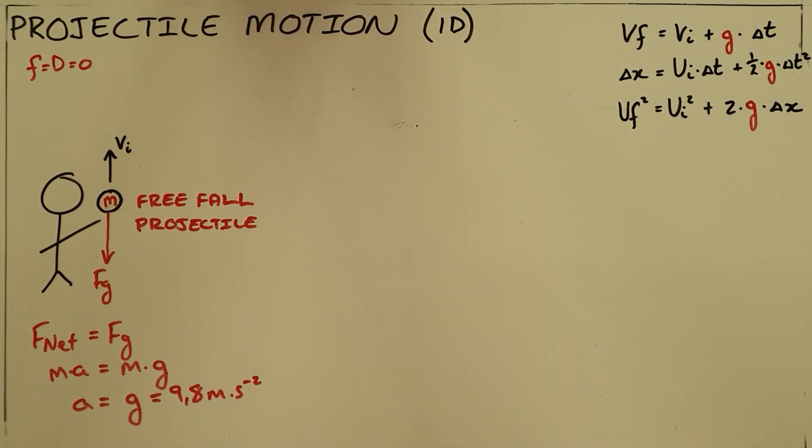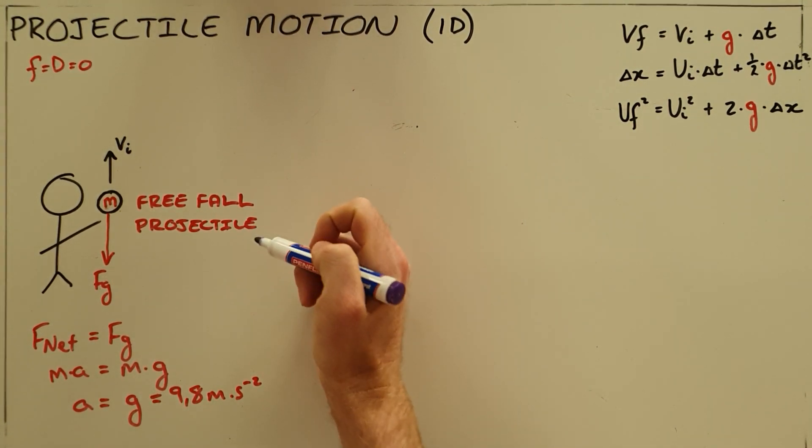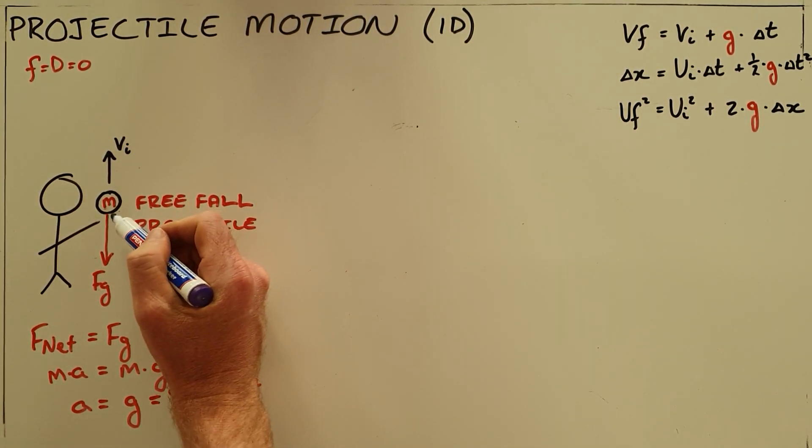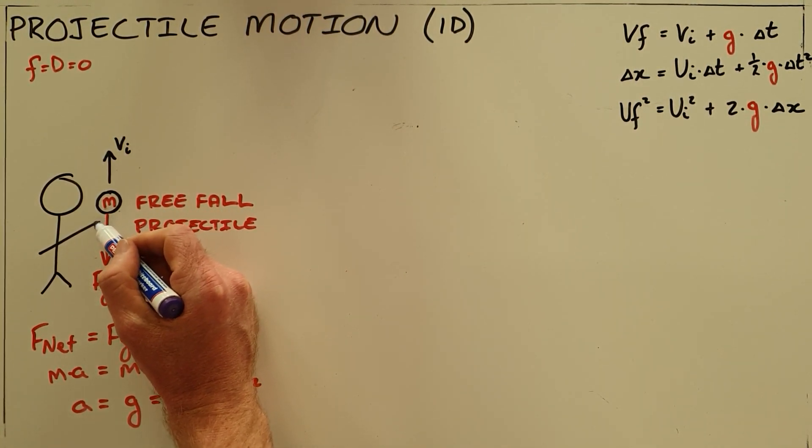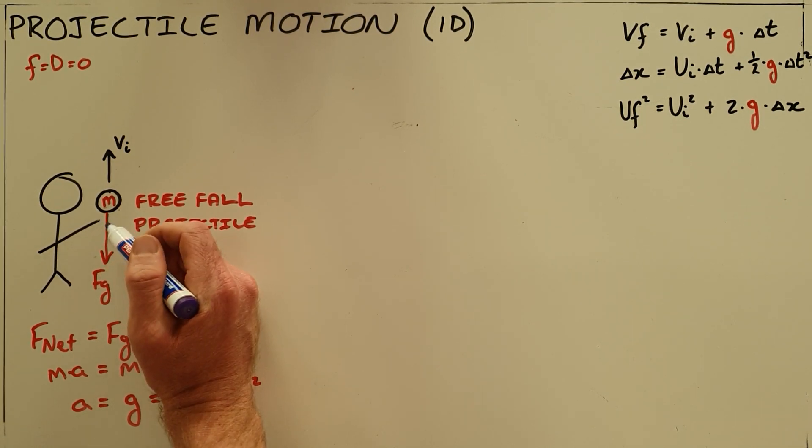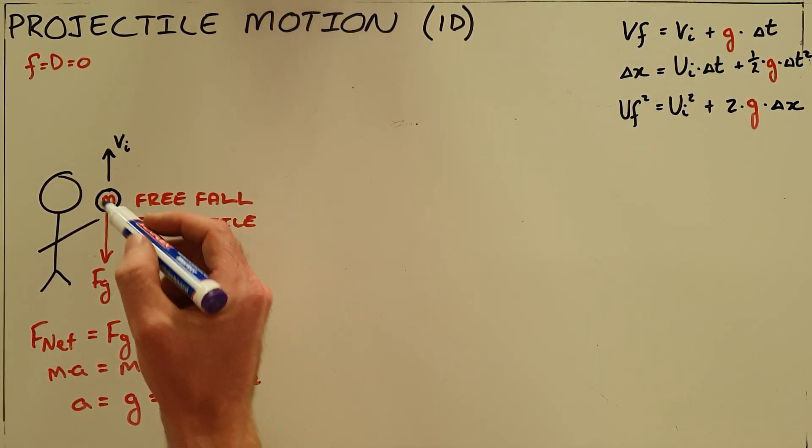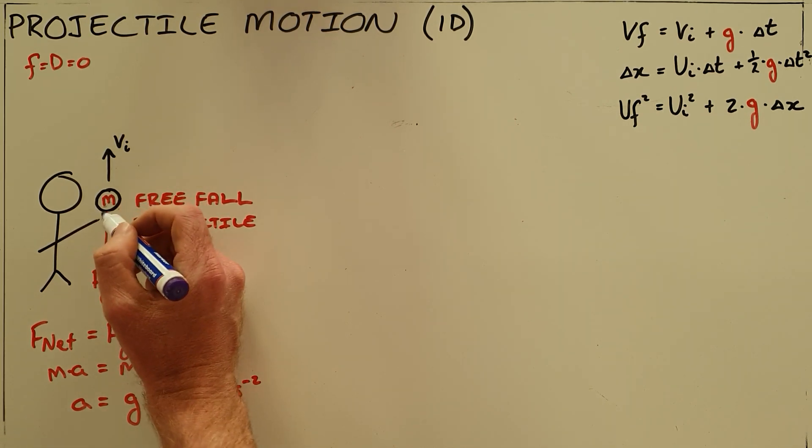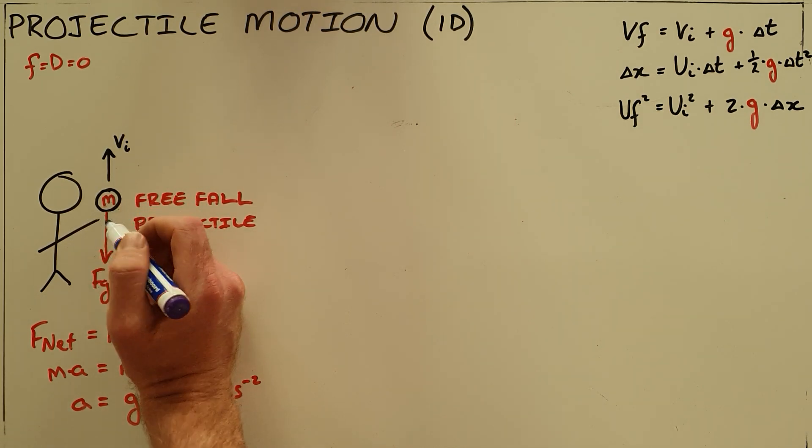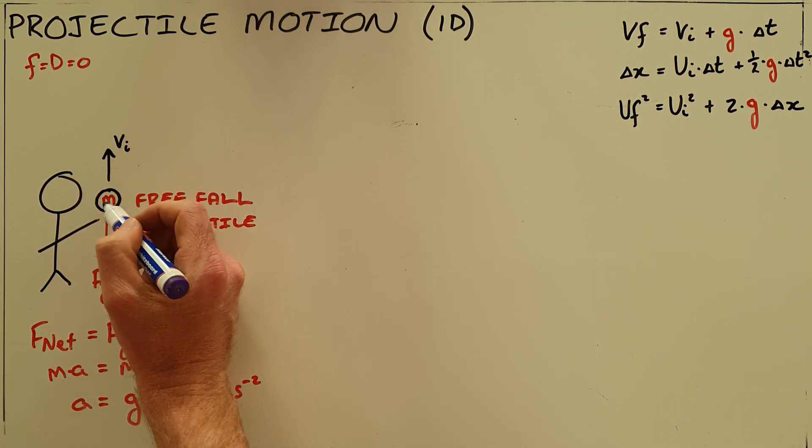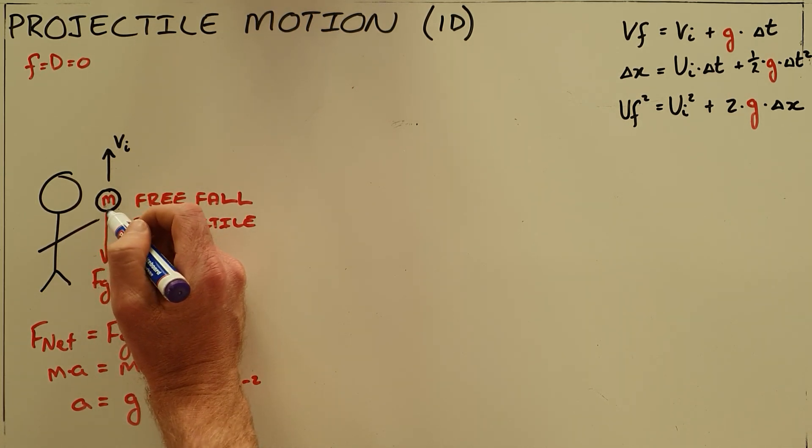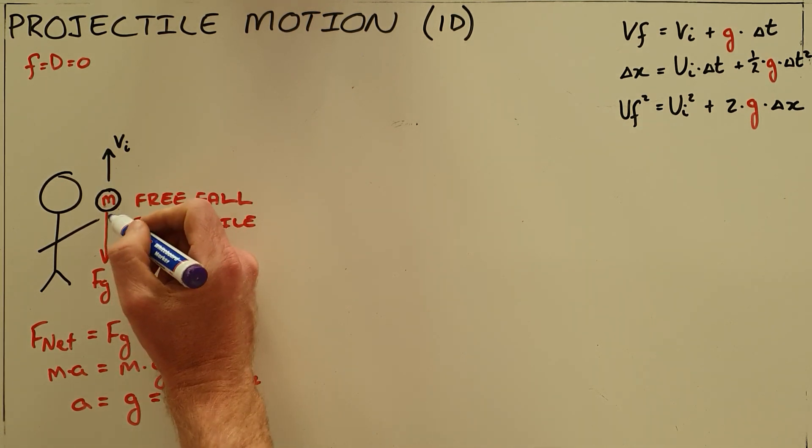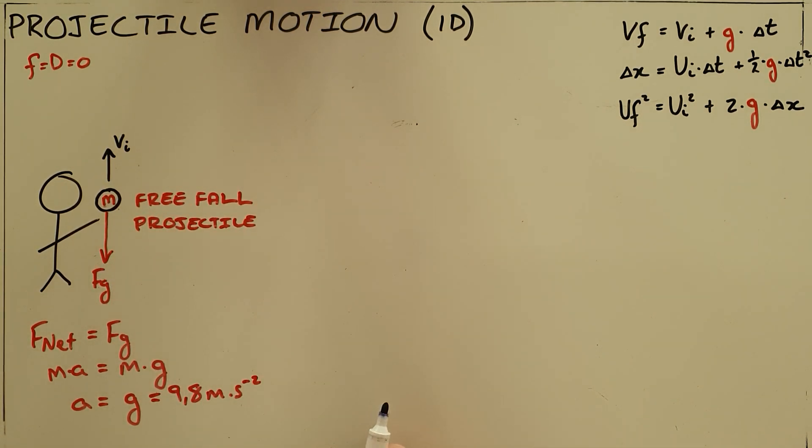What is important to realize here is that this section only deals with the motion of an object once it has left the thrower's hand or the gun that is shooting it—only while it is in freefall. Obviously there are external forces applied to this object to accelerate it, but once it leaves the hand or gun it is released from, there is only one force acting on it: the force of gravity.